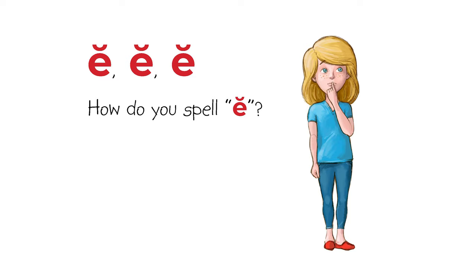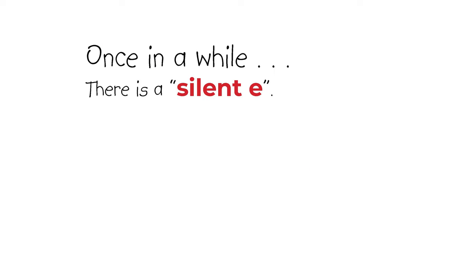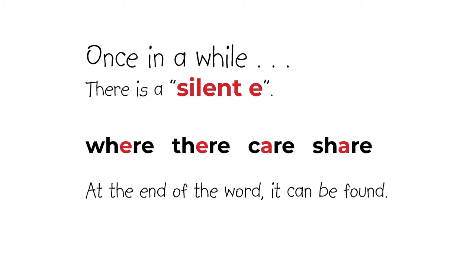For smart kids. E, E, E. How do you spell E? Once in a while, there is a silent E. At the end of the word, it can be found. But silent E doesn't make a sound.